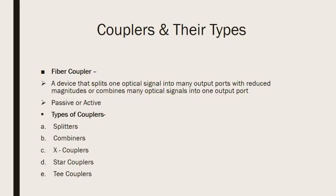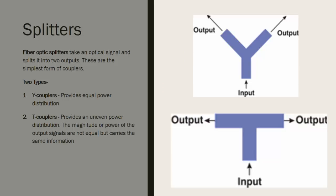There can be various classifications of couplers based on various parameters. We have broadly classified them into five: splitters, combiners, X couplers, star couplers, and T couplers. Splitters are the simplest form of couplers — devices that take one input signal and split it into two or many output signals. For a three-port splitter, there are two types: Y couplers and T couplers. A Y coupler provides equal power distribution at both output ports, while a T coupler provides uneven power distribution. The proportion of power received at either output port depends on the characteristics of the coupler.